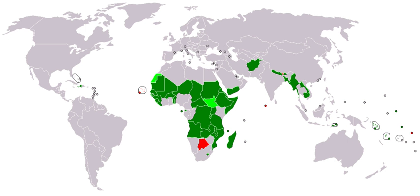In 2009, about 1.4 billion people in the world lived without electricity, and 2.7 billion relied on wood, charcoal, and dung for home energy requirements. This lack of access to modern energy technology limits income generation, blunts efforts to escape poverty, affects people's health due to indoor air pollution, and contributes to global deforestation and climate change. Small-scale renewable energy technologies and distributed energy options, such as on-site solar power and improved cookstoves, offer rural households modern energy services.